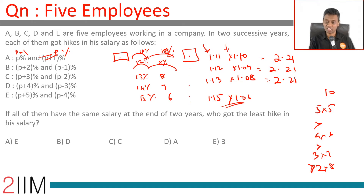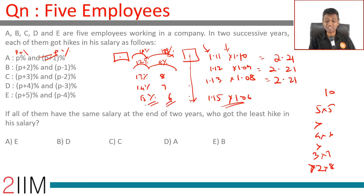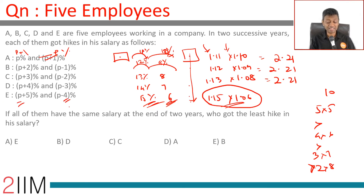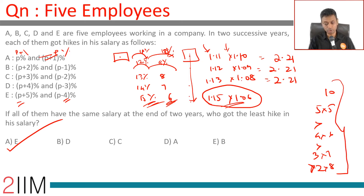Now, if all of them have the same salary at the end, who got the least hike? The one who ended at the same point but started with the highest amount — meaning the impact was least. That impact is least for the person whose percentages are furthest apart: p+5 and p-4, which is E. The key idea is: if the sum of two numbers is given, the product is maximum when they are as close as possible.